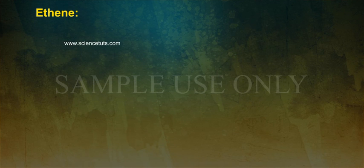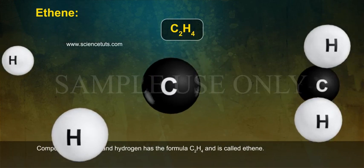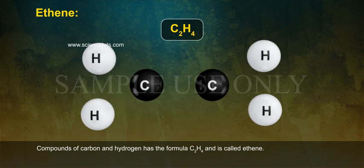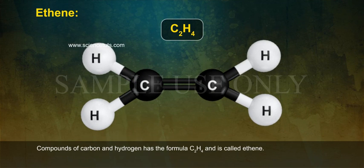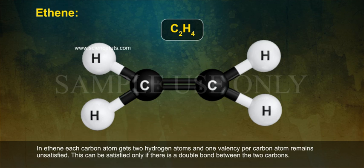Ethene: compounds of carbon and hydrogen has the formula C2H4 and is called ethene. In ethene, each carbon atom gets 2 hydrogen atoms and 1 valency per carbon atom remains unsatisfied. This can be satisfied only if there is a double bond between the two carbons.